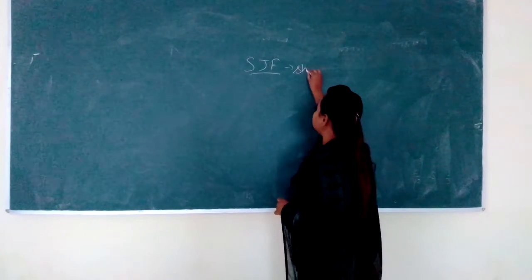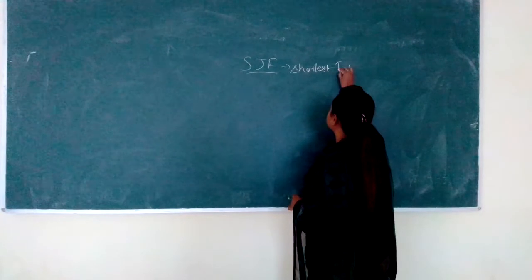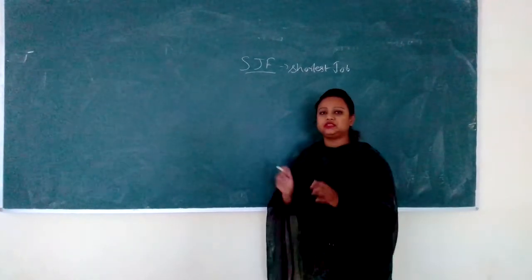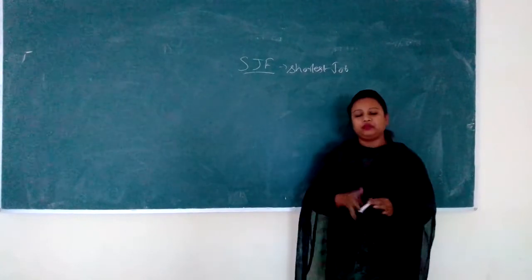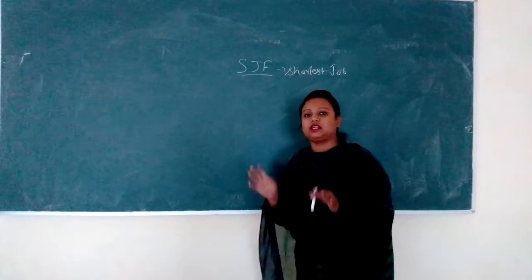Shortest job first. As the name implies, shortest means the process which is given with less burst time will be given more priority and will be executed first in the Gantt chart.